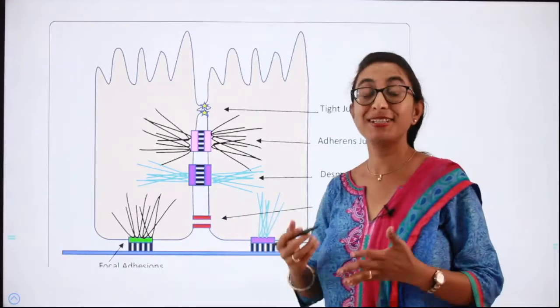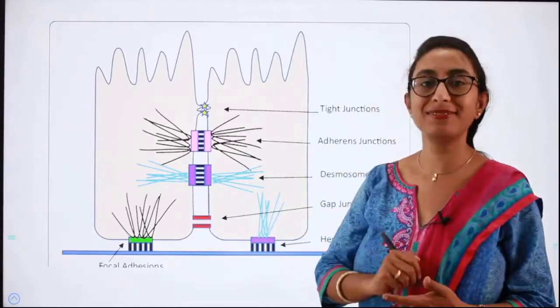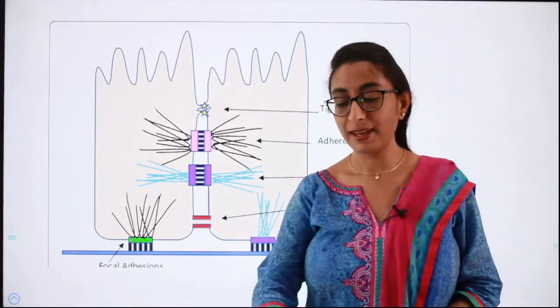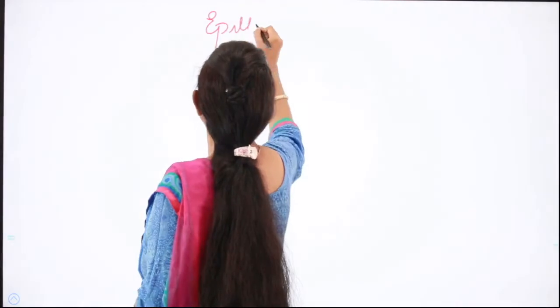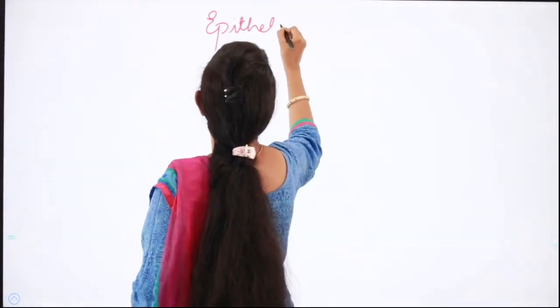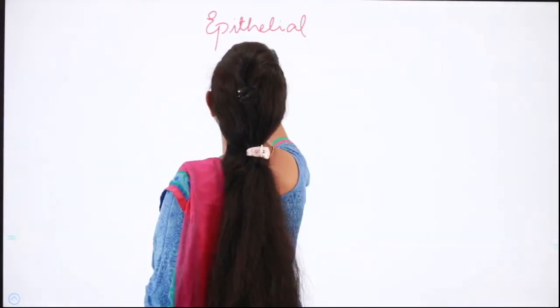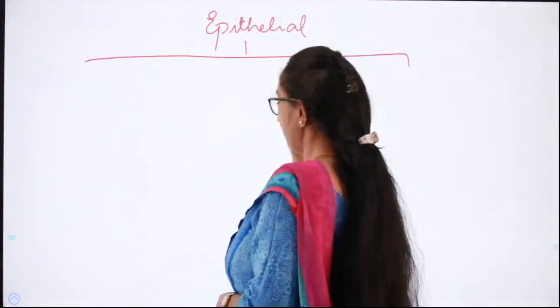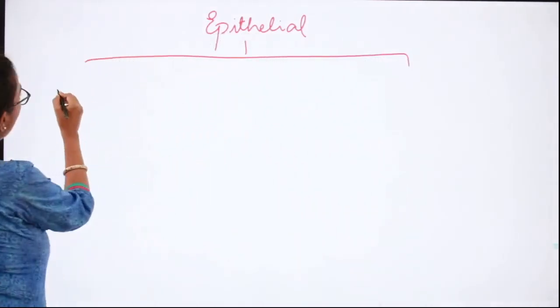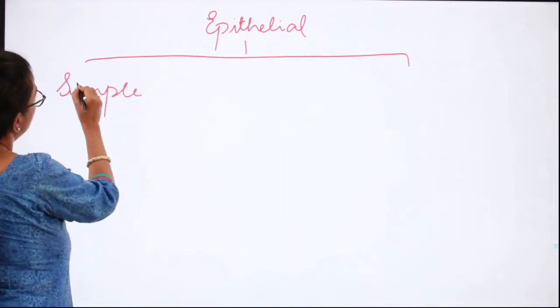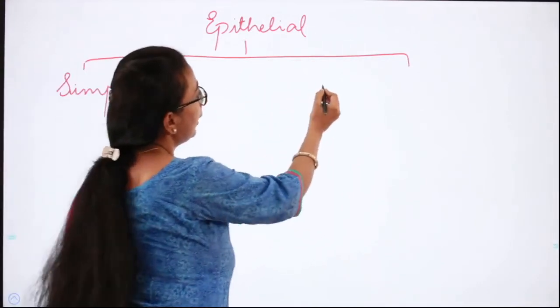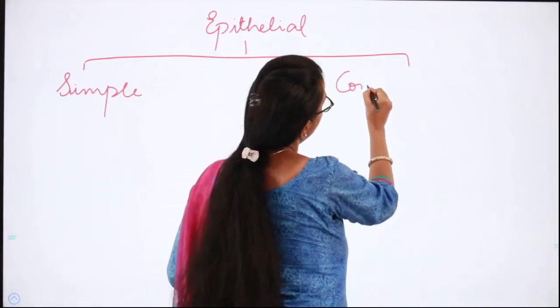Cell junctions are very important - please remember the three different kinds. Overall in today's lecture, we discussed about epithelial tissue, which can be broadly classified into simple epithelium and compound epithelium.